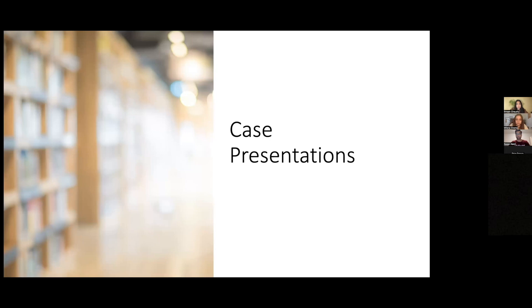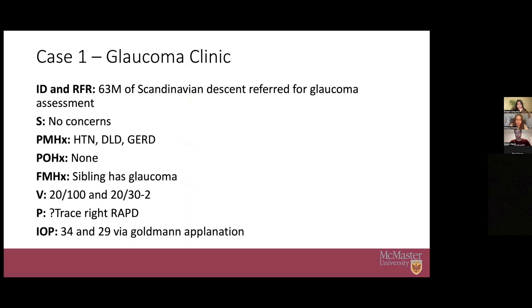First case: you're a med student on a clerkship rotation in glaucoma clinic with a new referral from an optometrist — a 63-year-old male of Scandinavian descent referred for glaucoma assessment. The patient has no concerns; he hasn't noticed any changes to his vision. Past medical history: hypertension, dyslipidemia, and GERD. No past ocular history. Family history of glaucoma with some siblings affected. Visual acuity 20/100 right eye and 20/30 minus two left eye. You think there might be a small relative afferent pupillary defect or RAPD. You check pressures and get 34 and 29.